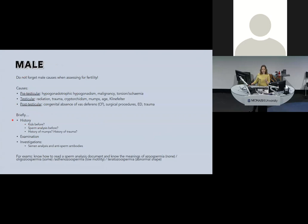For the exams, know how to read a semen analysis results table and know the meanings of azoospermia — no sperm at all; oligospermia — some sperm; asthenospermia — low motility, not moving properly; and teratospermia — abnormal shape. You'll often get MCQs where you're given a table of results and asked to identify the cause of infertility.